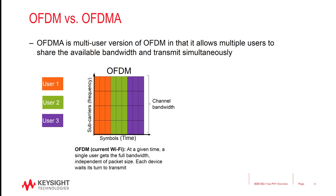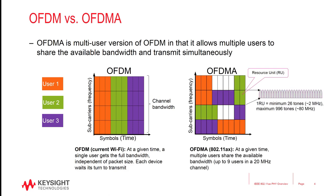OFDMA is a multi-user version of OFDM in that it allows multiple users to share the available bandwidth and transmit simultaneously. In OFDM, a single user gets the full bandwidth at any given time, regardless of the packet size, and multiple users are separated in the time domain only. OFDMA, on the other hand, distributes the available bandwidth to multiple users at the same time, so that multiple users can be scheduled to transmit or receive data simultaneously. This means each user is allocated a portion of the available channel bandwidth, which 802.11ax calls a resource unit.